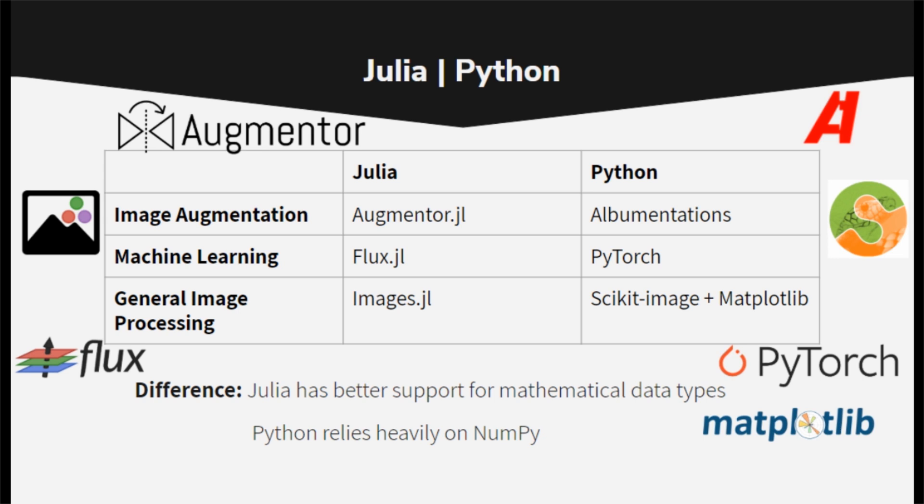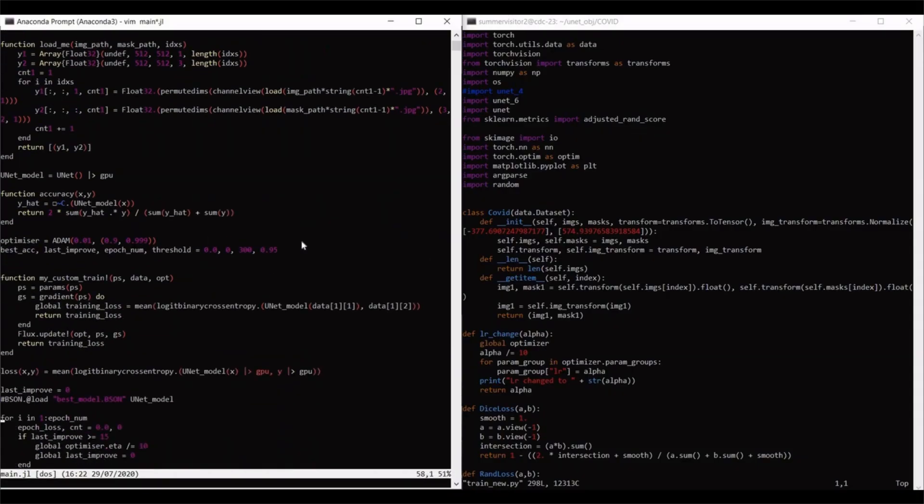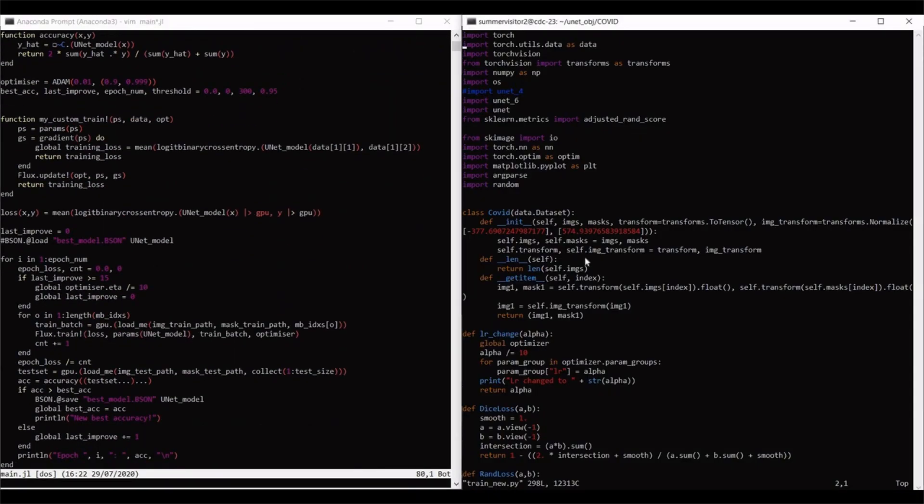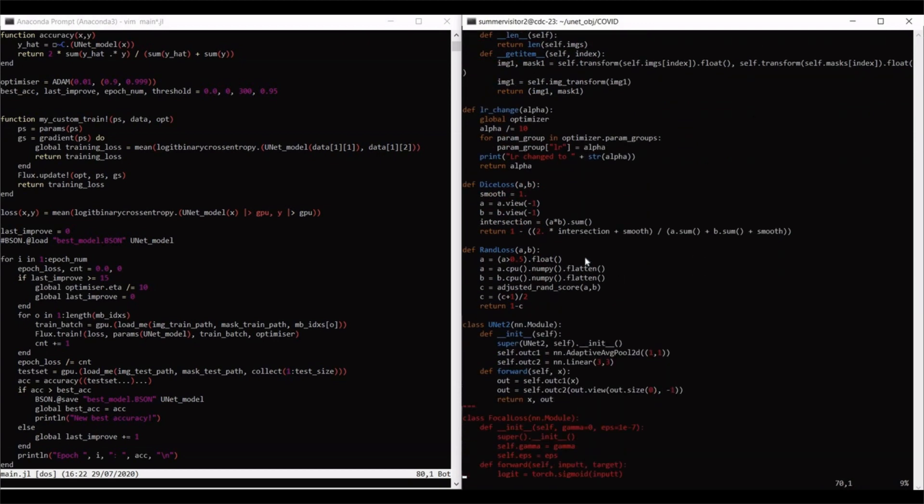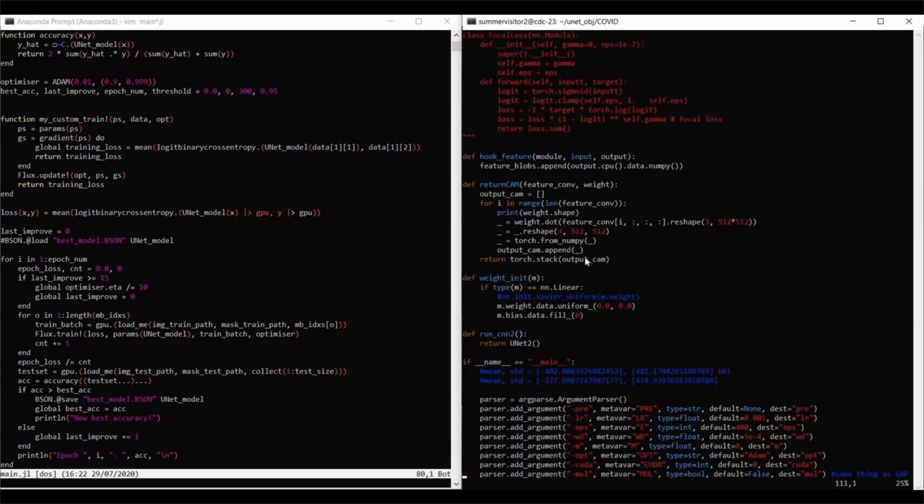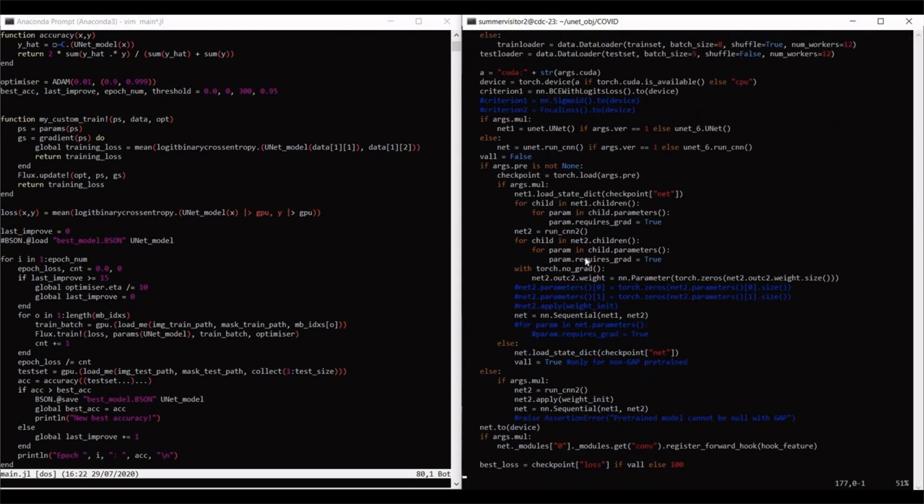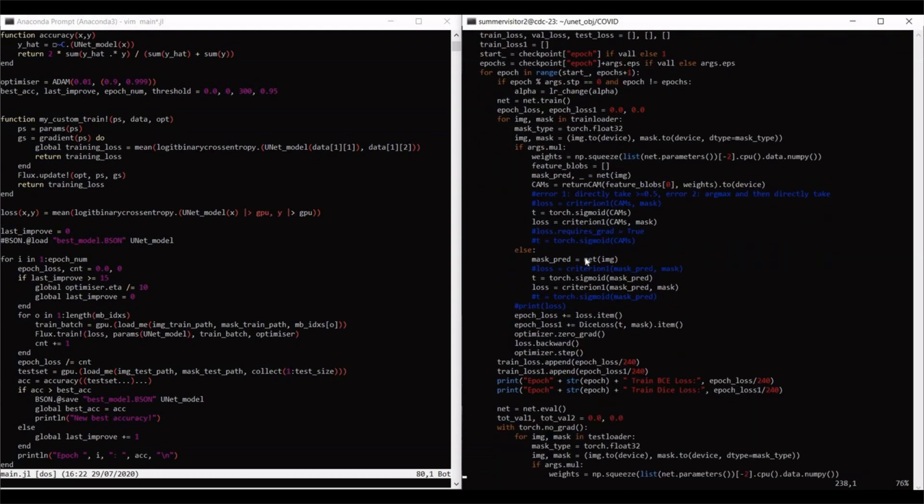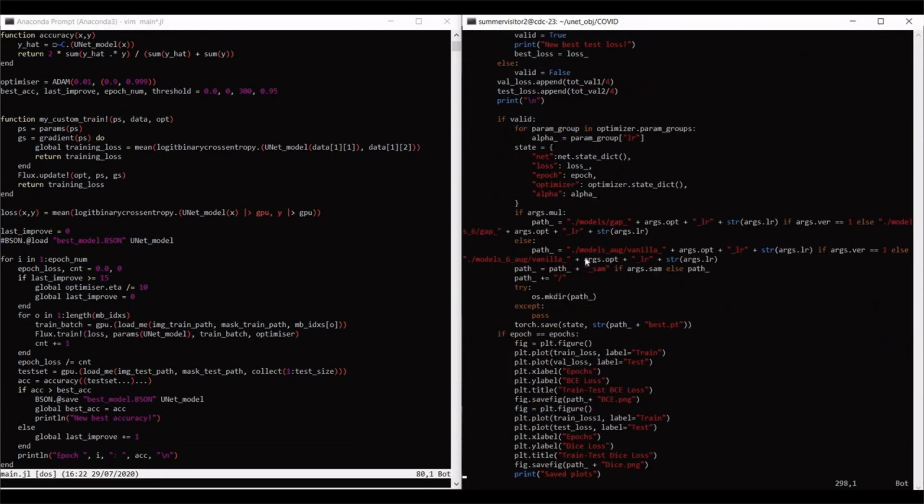One key difference between the two experiences was that Python does not automatically support mathematical data types like tensors and matrices, so I relied heavily on NumPy structures completely unsupported in vanilla Python, whereas Julia is much more friendly for more maths-oriented projects.